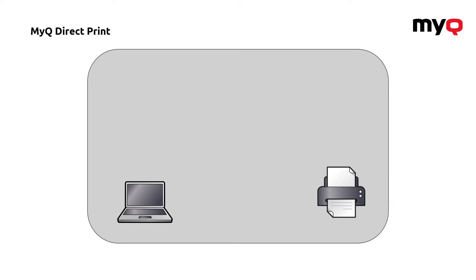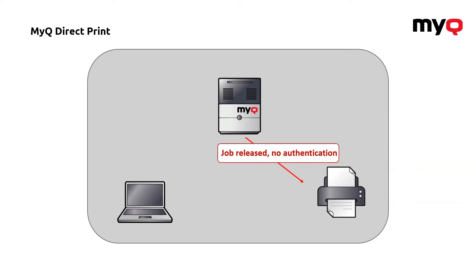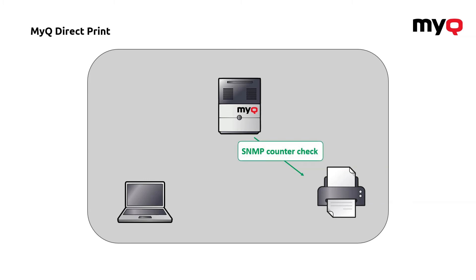Starting first with MyQ direct print. As the name states, this is about releasing the job directly to one machine. The user using this kind of queue will not even recognize that MyQ is running behind because everything works like standard printing. You send the job — the difference is that the job goes first to the server where it is analyzed, some rules are applied, and then the job is released without any authentication to the dedicated machine. The server will also check the counters so everything is properly accounted into reports.